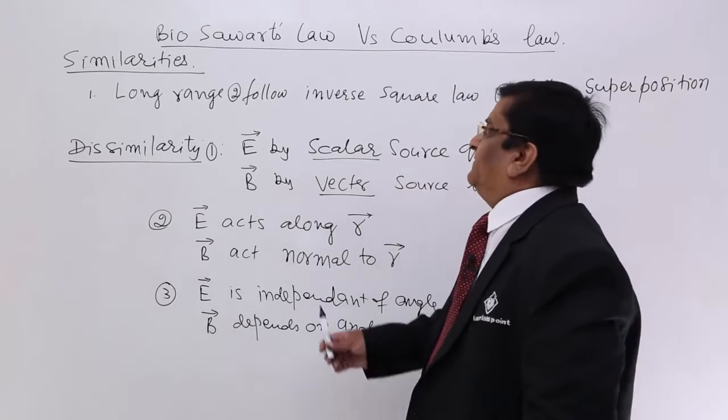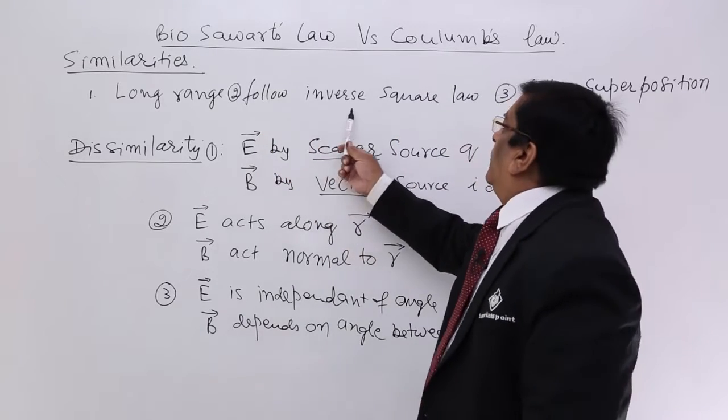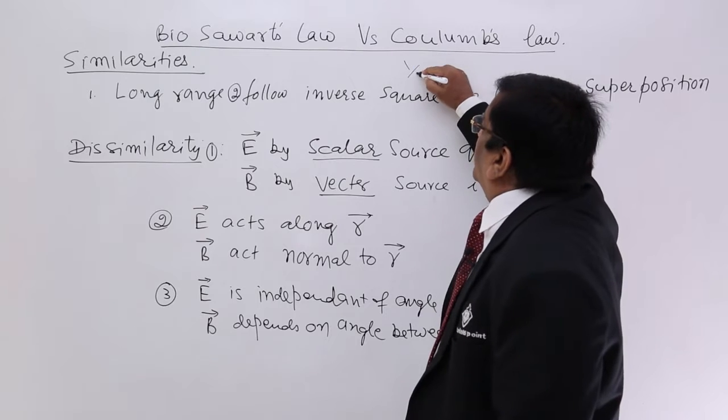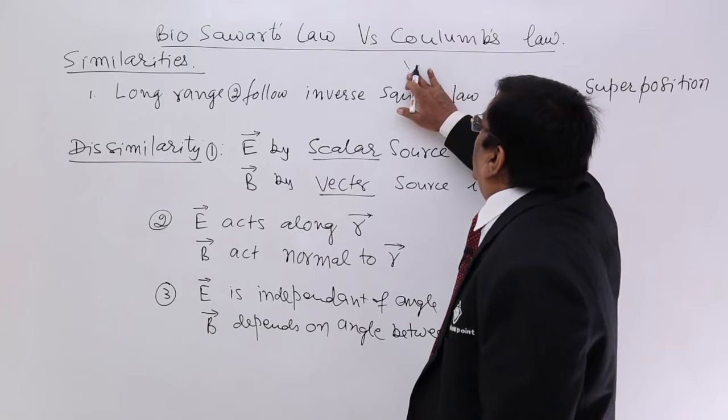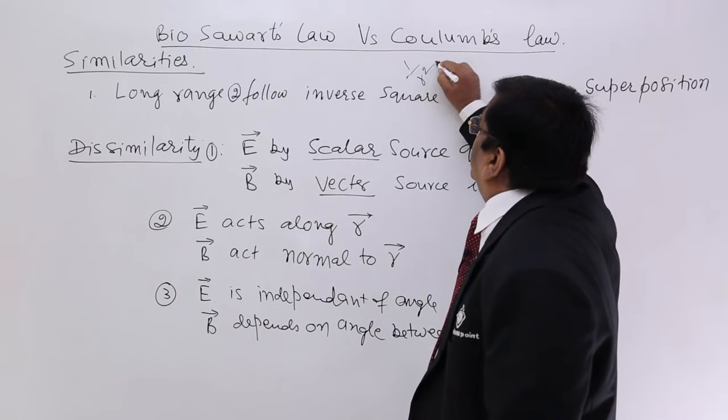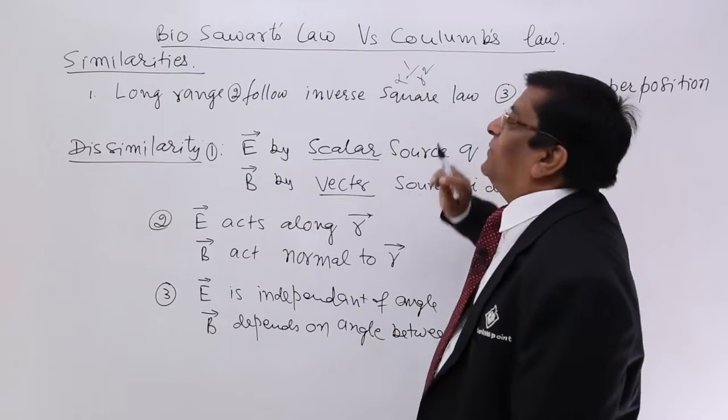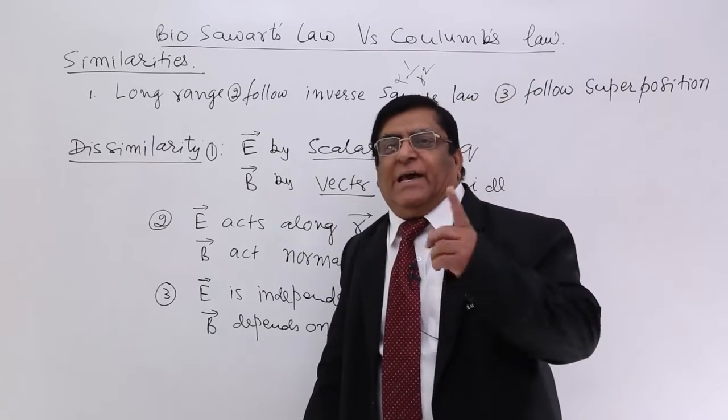Then both follow inverse square law. Both are proportionate to 1 upon R square. E as well as B. So both follow inverse square law.